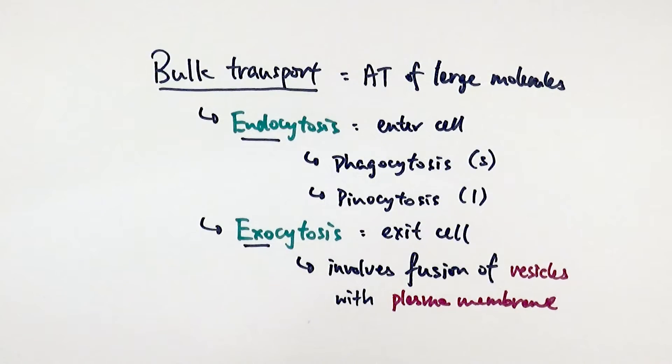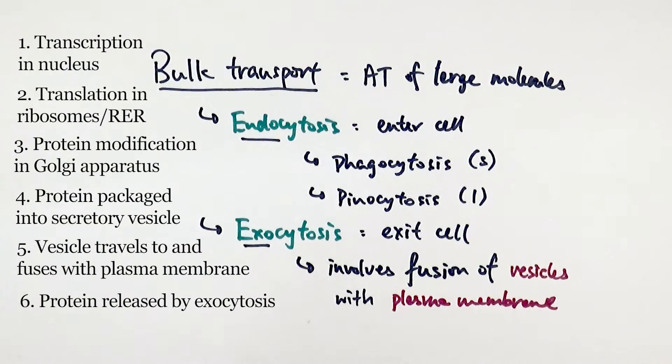Protein synthesis: you have transcription in the nucleus, then translation in the ribosomes or in the rough ER. The polypeptide then gets transported to the Golgi apparatus where it is modified or packaged, becoming a functional protein. Then the protein is packaged into a secretory vesicle. The secretory vesicle travels to the plasma membrane and fuses with it, releasing the protein via exocytosis. So that is how you want to phrase the whole process.